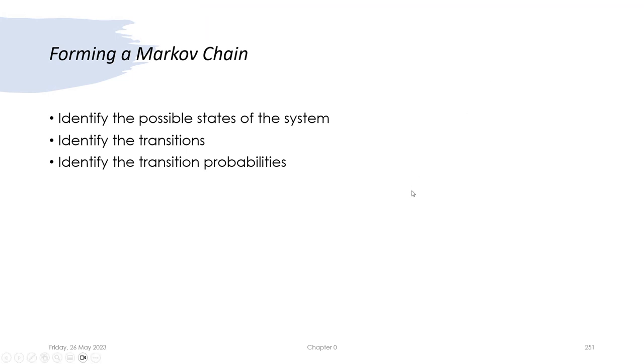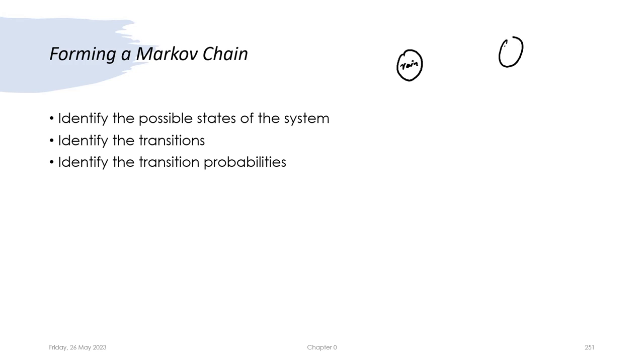Now the question is: how do we form a Markov chain? Given a process that is discrete-valued, discrete in time, has multiple states, and can randomly take one of those states, how do we organize our thoughts to form a Markov chain? We have seen two examples where the system had two states — rain and no rain — and transitions between them with given probabilities.